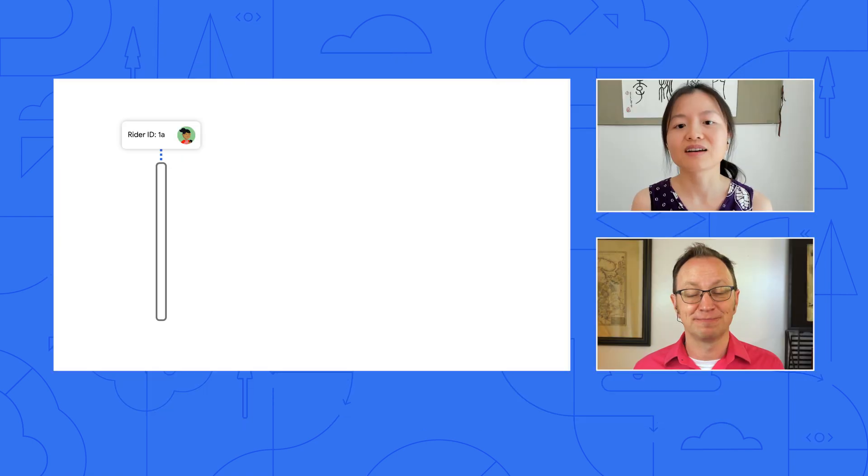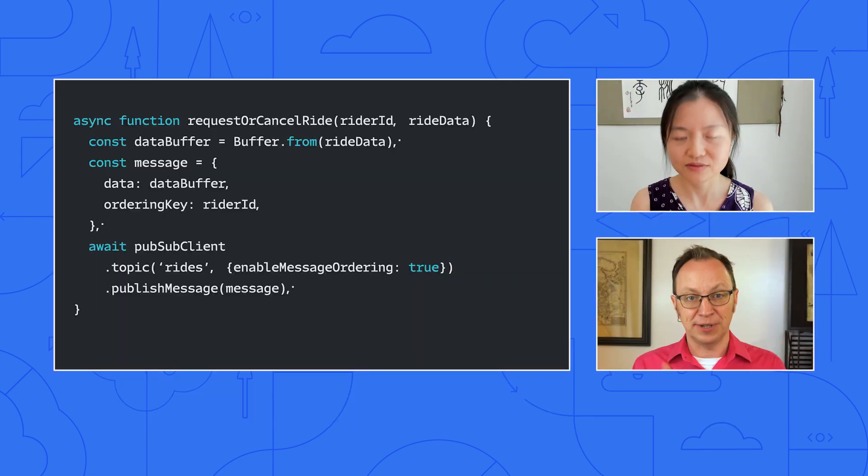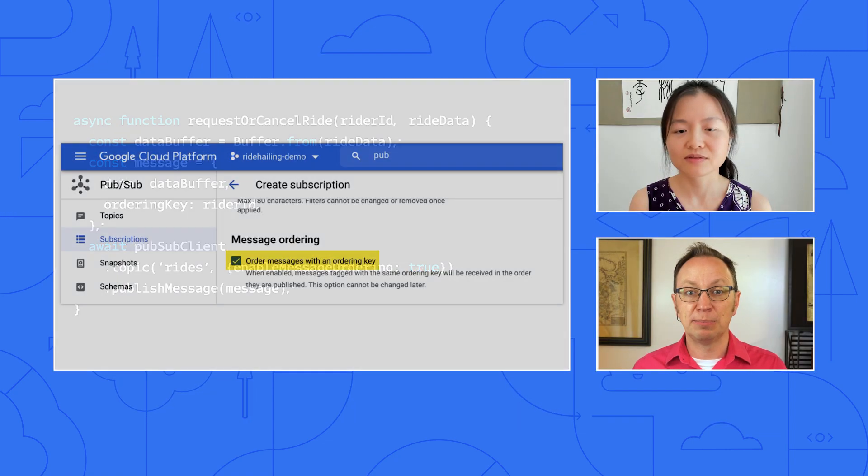So TNC, in the last episode, you introduced ordering of PubSub messages in the ride-hailing app I was building. In my original implementation, if a user requested a ride and then canceled that ride, sometimes the cancellation would arrive before the initial ride request, which confused my application. You enabled message ordering to resolve this issue — you showed me how to do that so that all messages for a particular rider arrive in the order they're published. In other words, the ordering key is the rider ID. Here is my code for that.